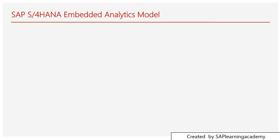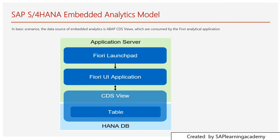Now I will talk about the model — the important part of this tutorial. As shown in the picture, we have the database table, that is the SAP HANA table. We write the CDS view — Core Data Services — which I will cover in the next slide. The CDS view is phased into the Fiori application, and Fiori is a part of the analytics. So the database table contains all kinds of transactional data, we write CDS views to fetch data from the table, and put it into the Fiori application for the user experience. That is the basic model of how Embedded Analytics looks in S4HANA.